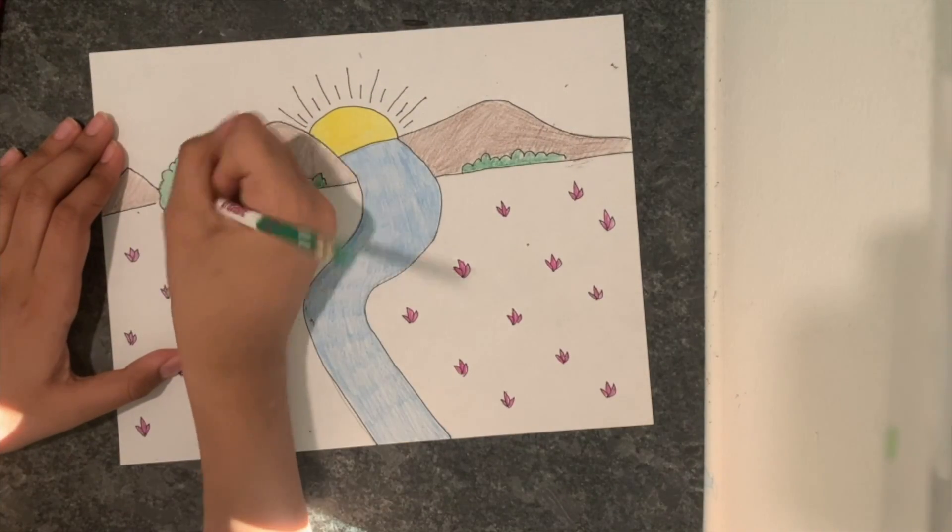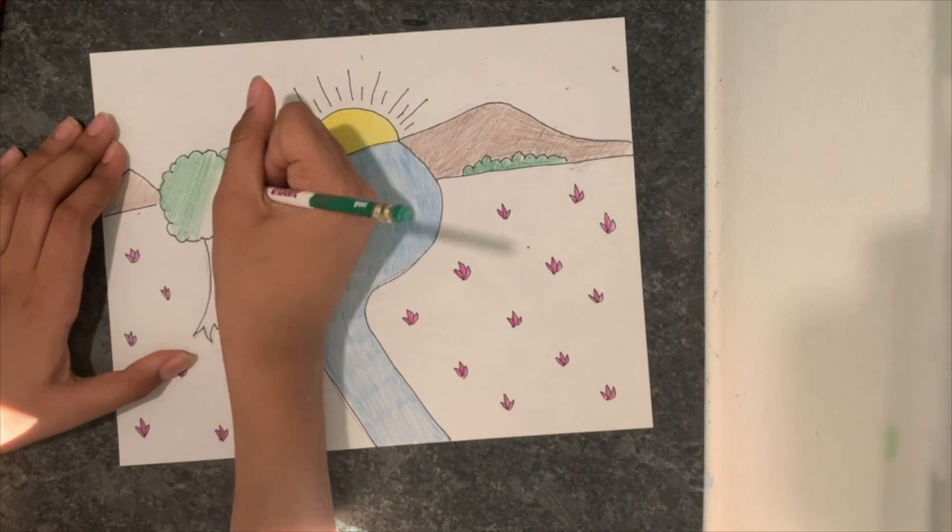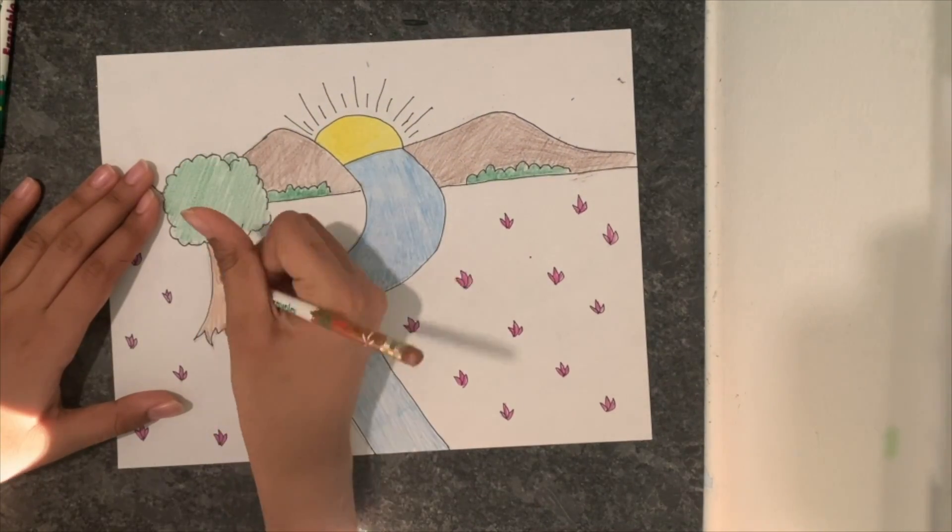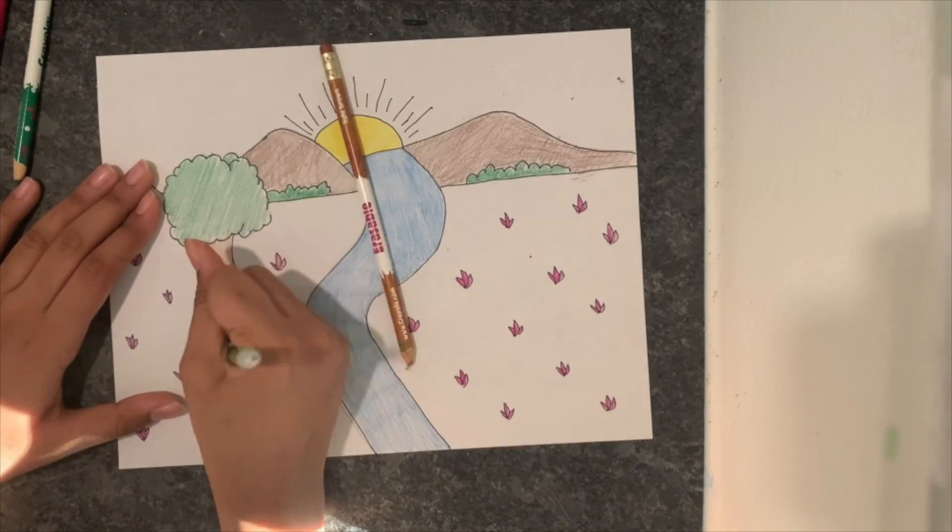And then for the top of the tree where the leaves are, I also used the same dark green color that I did for the bushes. And then for the trunk I used that same brown color that I used on the mountains.